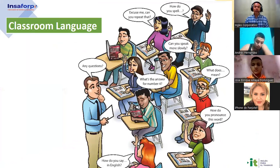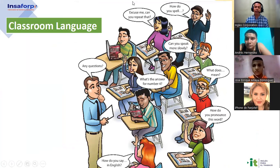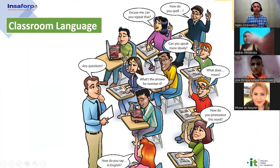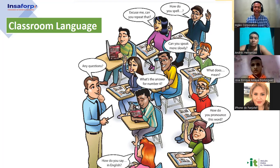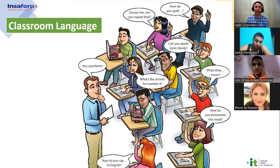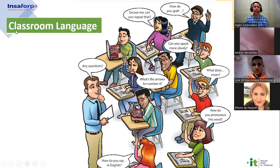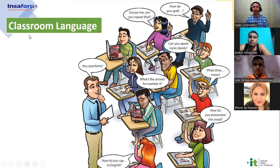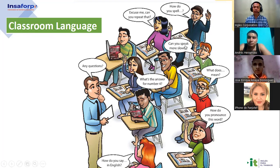Let's start. This is some classroom language we use. For example, we say 'Excuse me, can you repeat that?' — if you don't understand. If I say 'deoxyribonucleic acid' — 'Excuse me, teacher, can you repeat that, please?' And 'how do you spell?' — spelling is when you say letter by letter. For example, classroom is C-L-A-S-S-R-O-O-M. How do you spell classroom? If the teacher speaks very fast: 'Can you speak more slowly?'